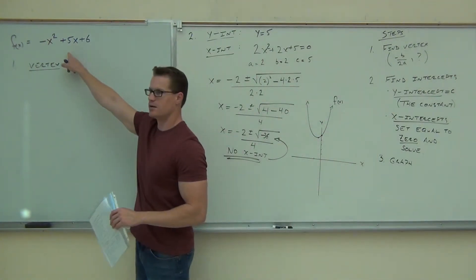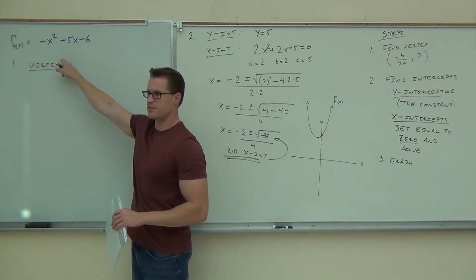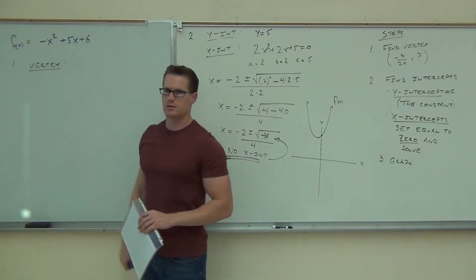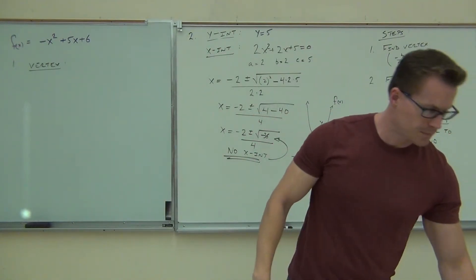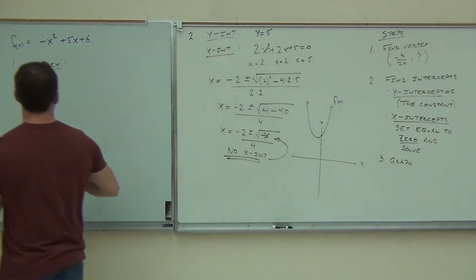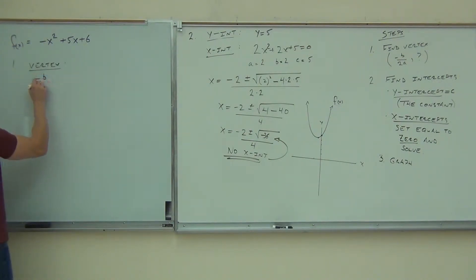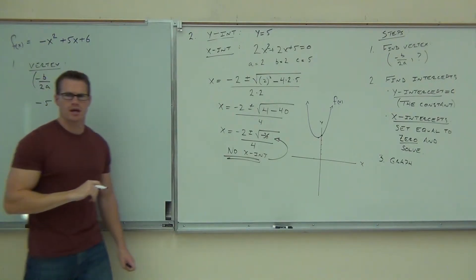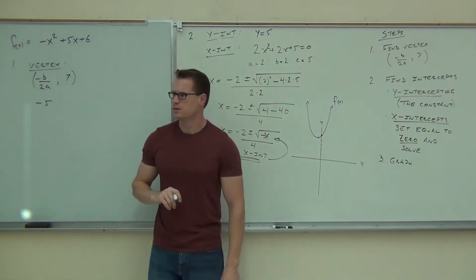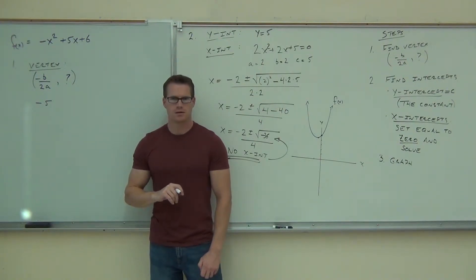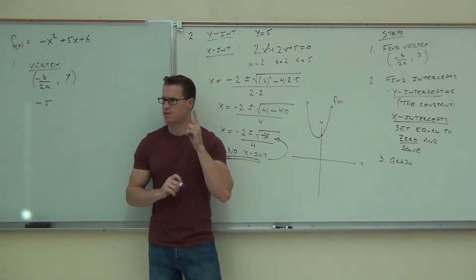It's harder when they're not even. You're going to get a fraction. Hey, by the way, what is your A here? Negative one. What's your B? What is your C? Are you going to get an upward or a downward facing parabola? Downward. Keep that in your mind. You're going to get a downward facing parabola.